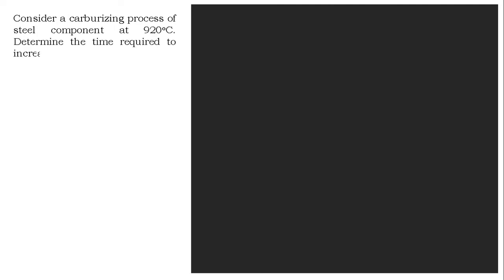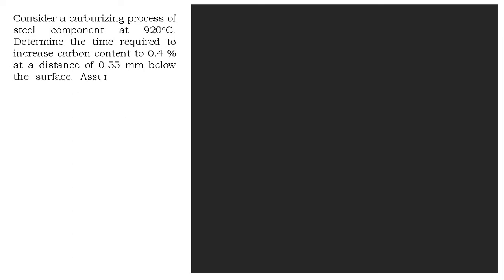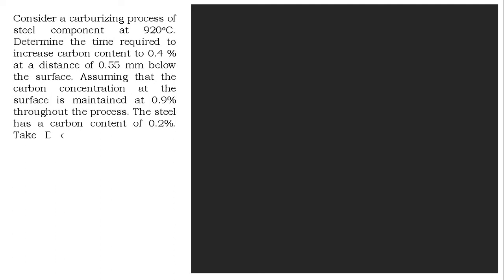Let's take one numerical. Consider a carburizing process of a steel component at 920°C. Determine the time required to increase the carbon content to 0.4% at a distance of 0.55 mm below the surface, assuming that the carbon concentration at the surface is maintained at 0.9% throughout the process. The steel has an initial carbon content of 0.2%, and the diffusivity of carbon in steel at 920°C is D = 1.28 × 10⁻¹¹ m²/s.